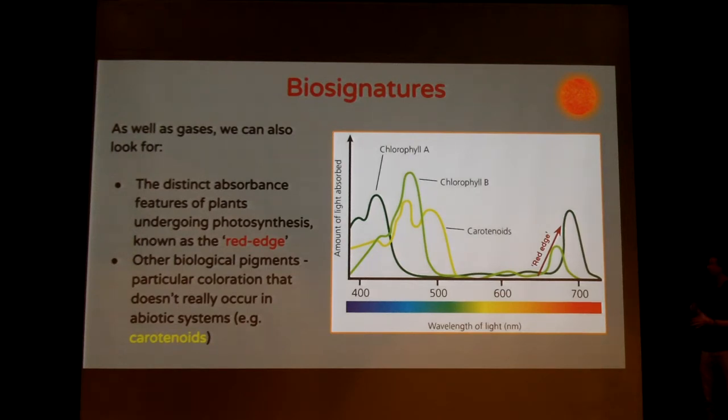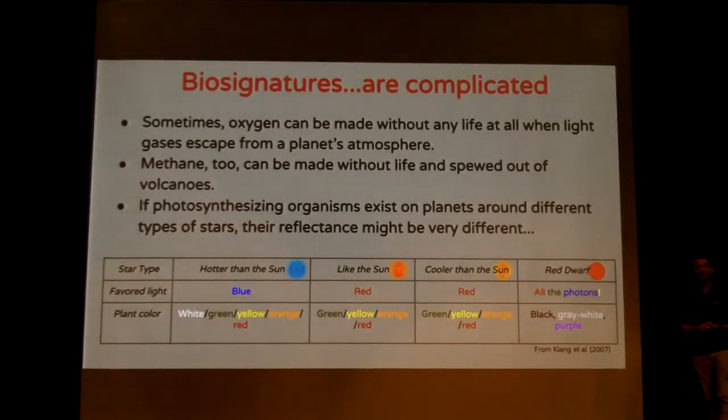So when we observe a planet's surface in those wavelengths, we see it as very dark. And that can be also a good biosignature, because we don't know of any abiotic processes that result in that kind of reflectance feature. So if we find that strong reflectance made on another planet, we can say, well, maybe there's something like plants on that planet that are producing the same strong reflectance from the surface.